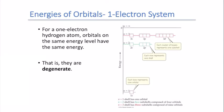For a one-electron system like hydrogen — which is what Niels Bohr based his model on — all the different energy levels become the same, or degenerate. So n equals 1 only has 1s; n equals 2 has 2s and 2p, which are the exact same energy; and n equals 3 has 3s, 3p, and 3d, all the same energy. This is how Bohr's solar system model worked for hydrogen.